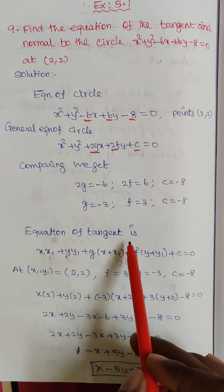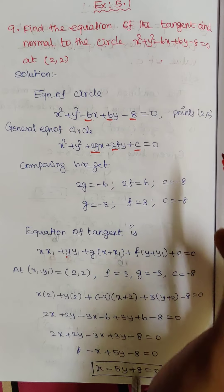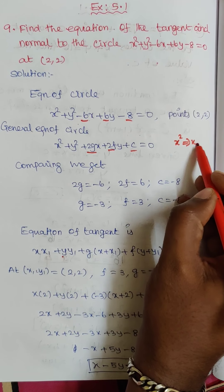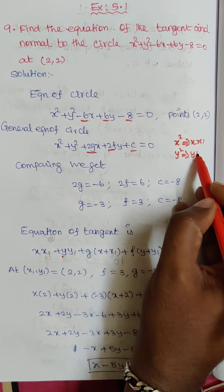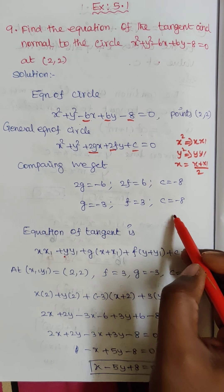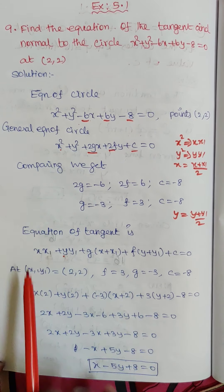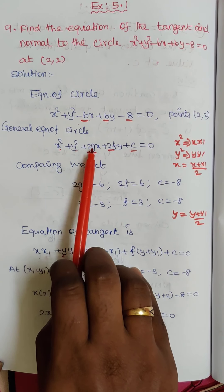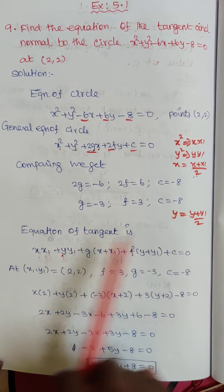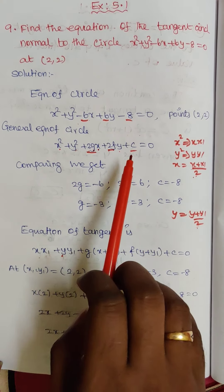The equation of tangent formula is: xx₁ plus yy₁ plus g(x plus x₁) plus f(y plus y₁) plus c equal to 0. Here the 2 in 2g and 2f cancels with the denominator, giving us g into (x plus x₁) plus f into (y plus y₁) plus c equal to 0.